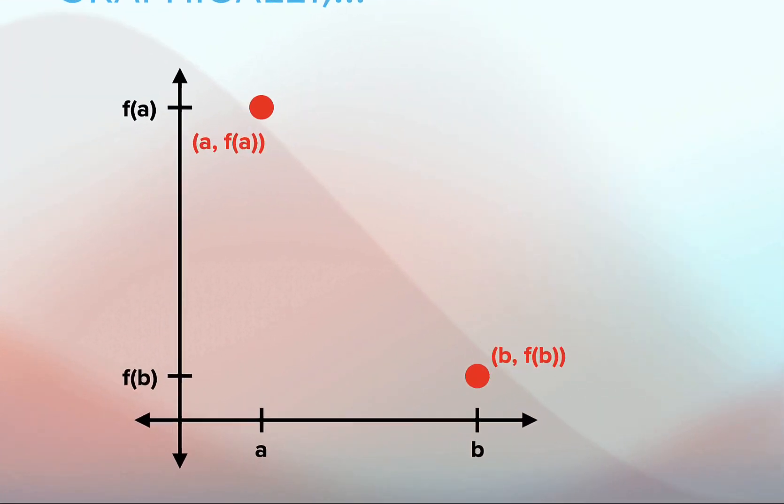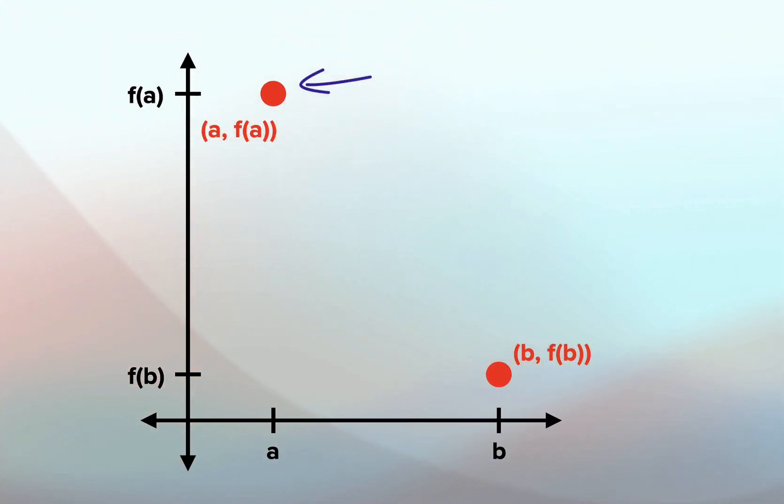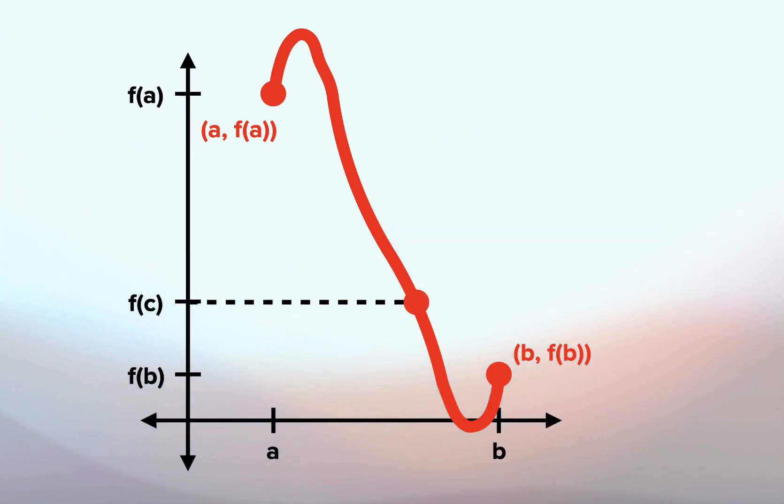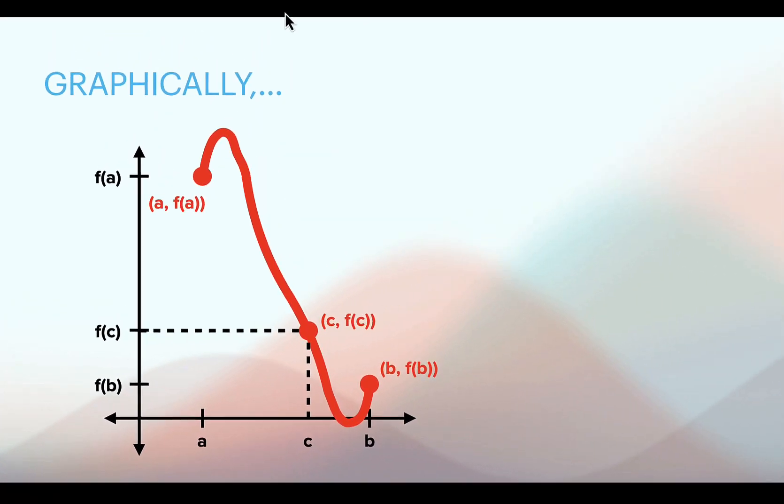So graphically, if you want to look at it, let's start at that red dot where a and f(a) is and then end at that red dot where b and f(b) is. You can join those two with any continuous function you want. It can be pretty mild, it can be pretty crazy. But you can guarantee that every y-value on that y-axis between f(a) and f(b) is going to be the y-value for some x-value. So if I pick a random y-value f(c) and I follow that to the graph, that dot is going to go down to some x between a and b.